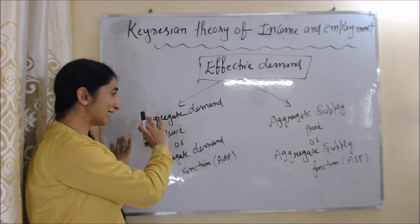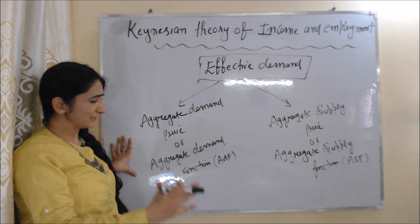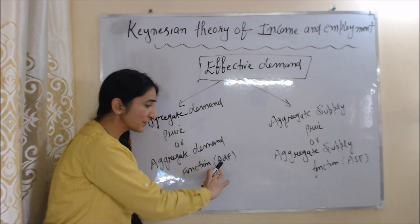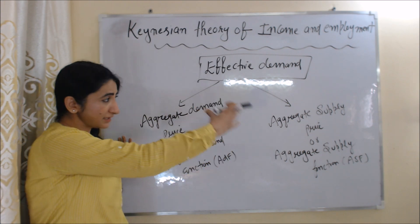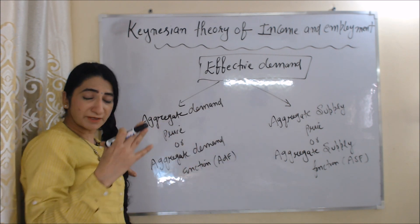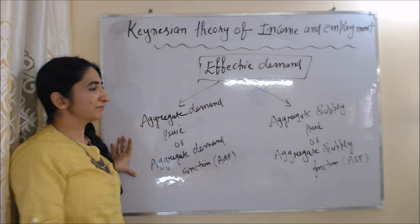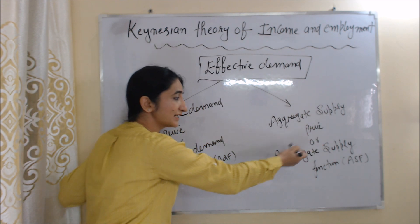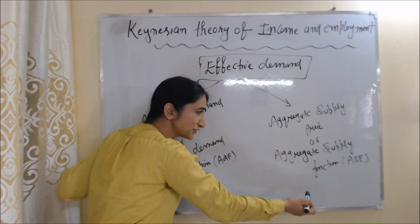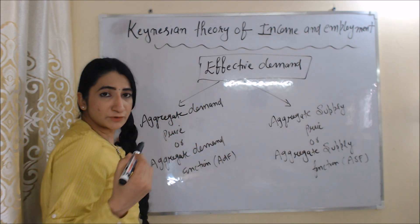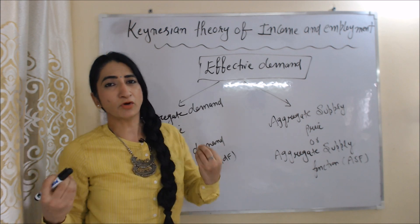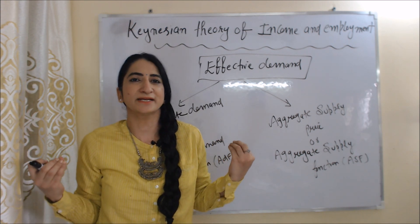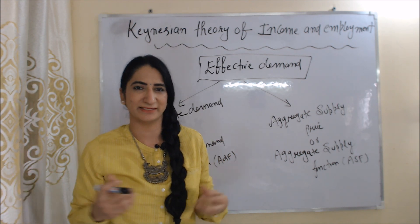The first factor is aggregate demand price, or aggregate demand function — in short, ADF. The second factor which determines effective demand is aggregate supply price, or aggregate supply function — in short, ASF. First of all, we will talk about what aggregate demand price and aggregate supply price are.